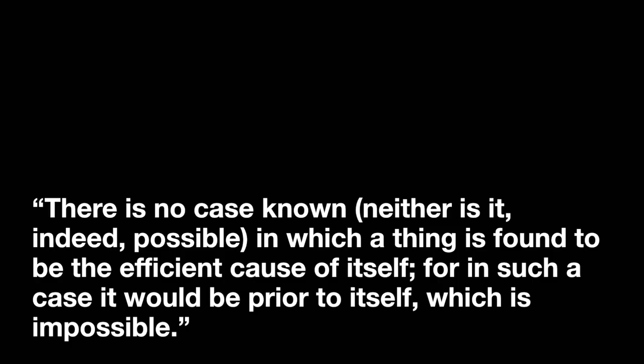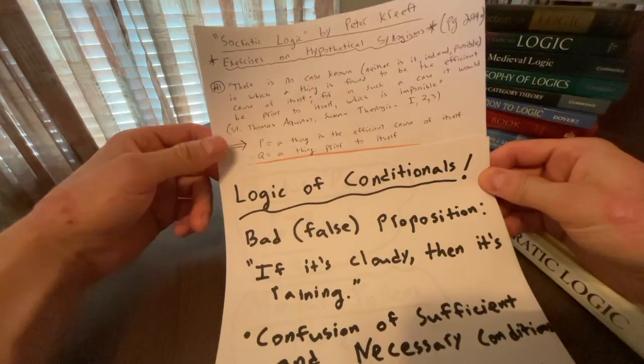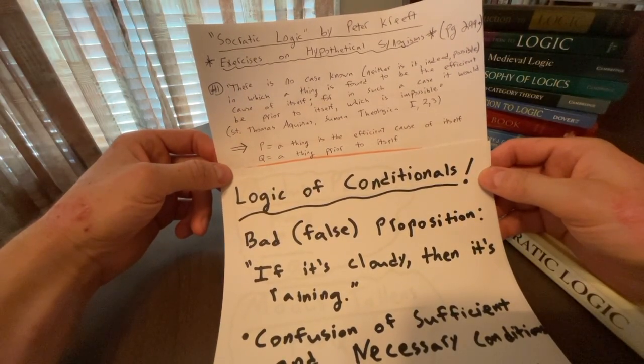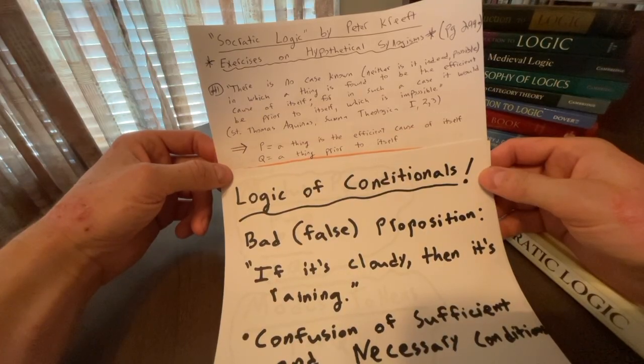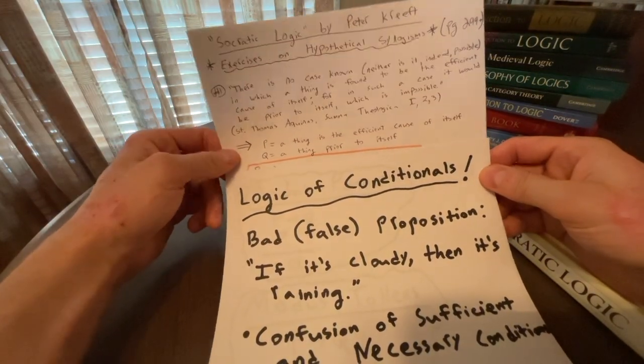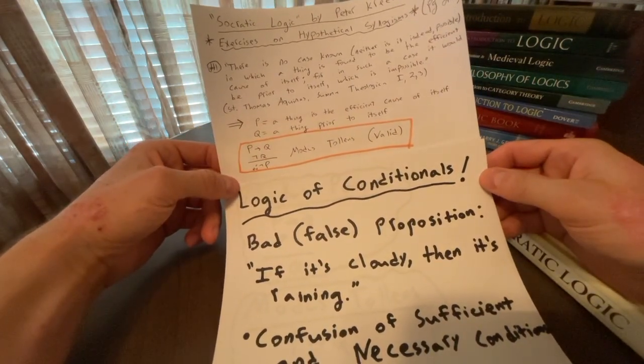What is P? What is Q? Construct the argument and then determine the validity. So look at the form of the argument. So for example, we might say that P represents a thing is the efficient cause of itself, and that Q represents a thing prior to itself. And then we can think about, okay, what is the argument? Well, we really have if P, then Q, not Q, therefore not P.